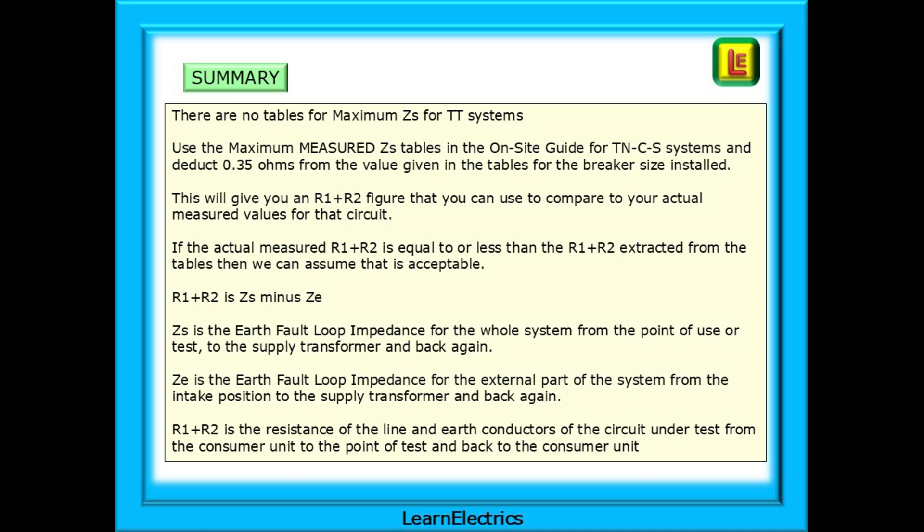And that is how I evaluate and confirm the internal wiring of a TT dwelling, a quick and easy method to give you peace of mind that this part of your own work is okay. There are no tables for maximum ZS for TT systems. Use the maximum measured ZS tables in the on-site guide for TNCS systems and deduct 0.35 ohms from the value given in the tables for the breaker that is installed. This will give you an R1 plus R2 figure that you can use to compare to your actual measured values for that circuit. If the actual measured R1 plus R2 is equal to or less than the R1 plus R2 extracted from the tables, then we can assume that the circuit values are acceptable.